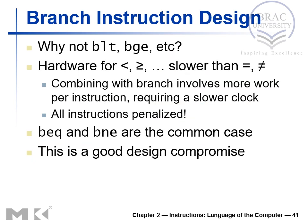Regarding branch instruction design: MIPS does not have branch-on-less-than, branch-on-greater-than, branch-on-less-than-or-equal, or branch-on-greater-than-or-equal instructions. The reason is that the hardware for these instructions is slower than for equal and not-equal comparisons. We have seen branch-equal and branch-not-equal, but not these others. While it is possible to implement them using branch-equal and branch-not-equal, they take longer to execute. Since branch-equal and branch-not-equal are the more common case, MIPS only provides direct instructions for those — a good design compromise.